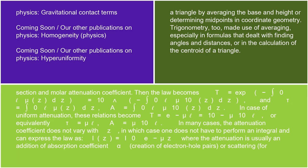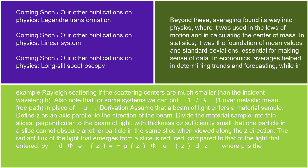In many cases, the attenuation coefficient does not vary with z, in which case one does not have to perform an integral and can express the law as I(z) = I₀ e^(−μz), where the attenuation is usually an addition of absorption coefficient α, creation of electron-hole pairs, or scattering — for example, Rayleigh scattering if the scattering centers are much smaller than the incident wavelength. Also note that for some systems we can put 1/λ (one over inelastic mean free path) in place of μ.